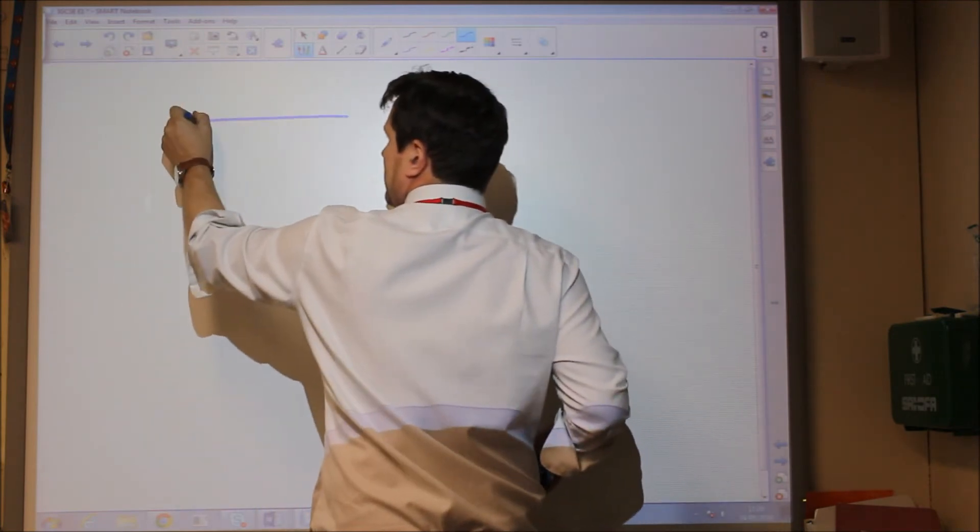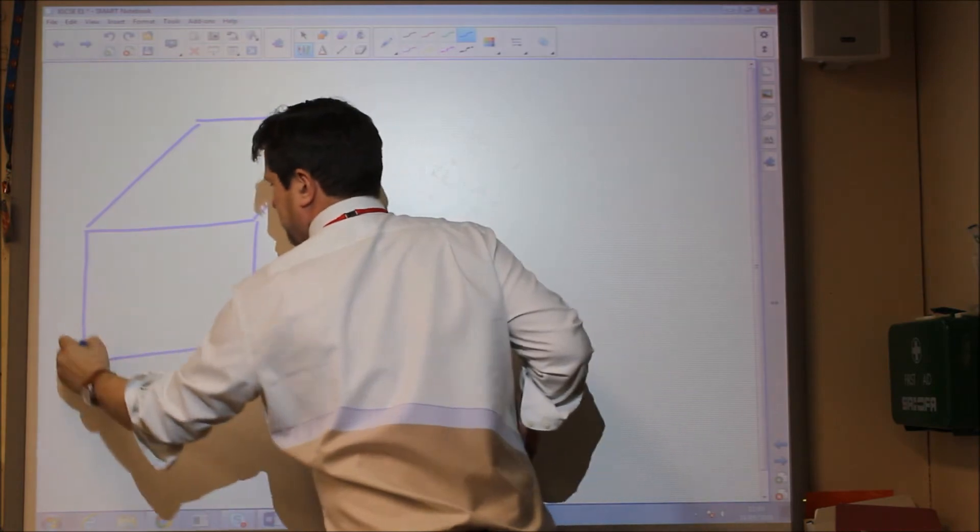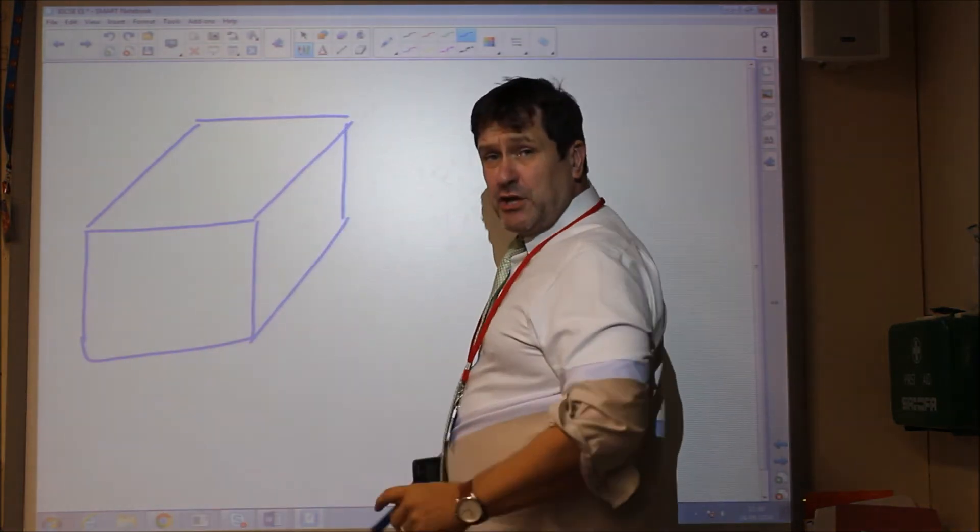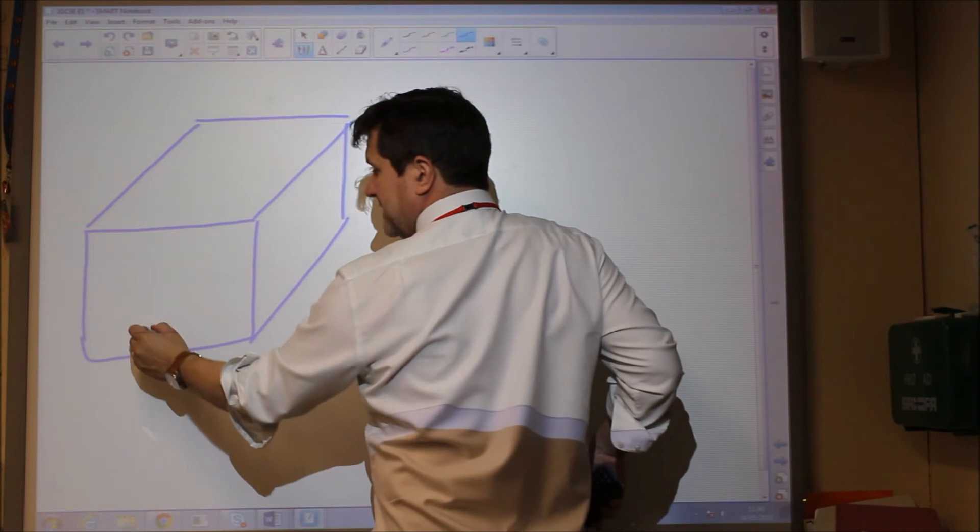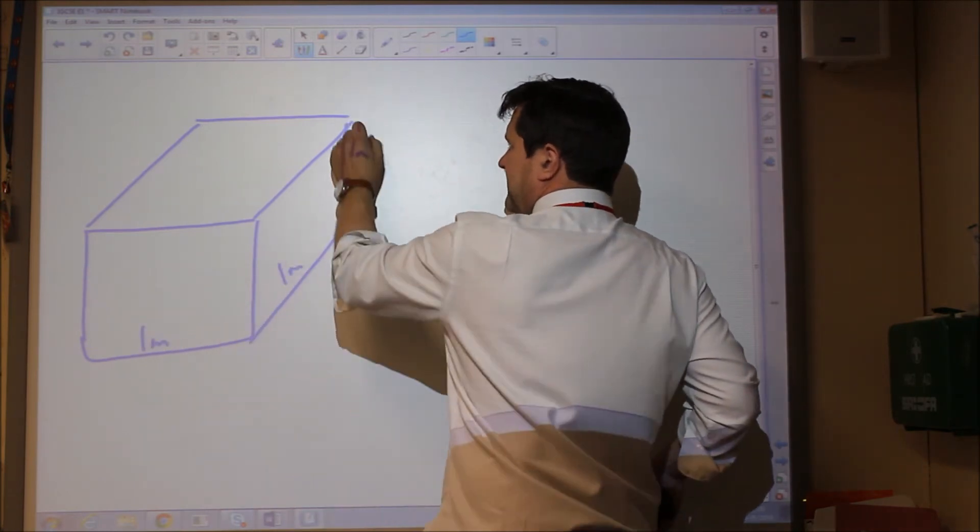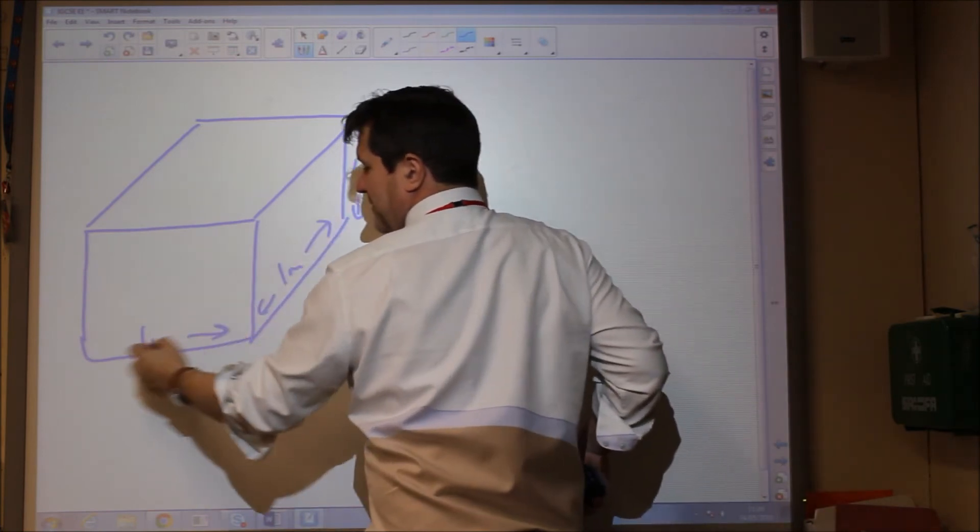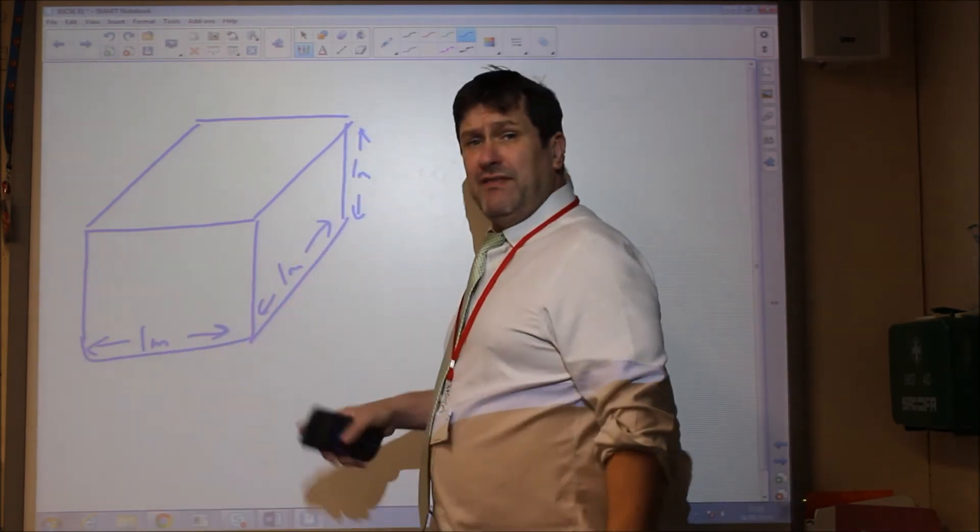If we take a one metre cubed box, so it is one metre by one metre by one metre. Now if we look at this box, and we say how many centimetres cubed are in this box, a lot of people will say silly things like 100 or 10,000.